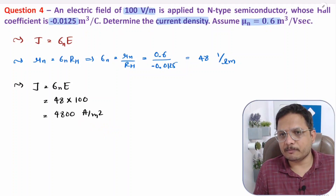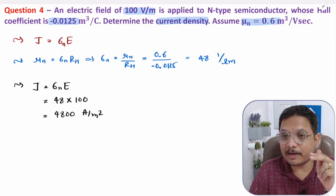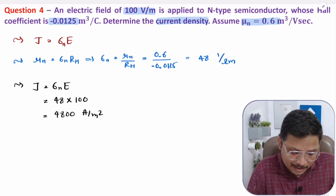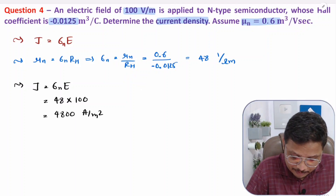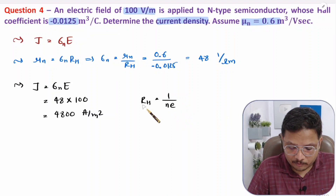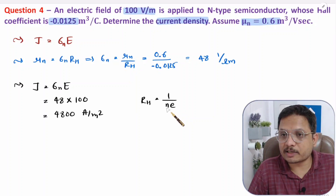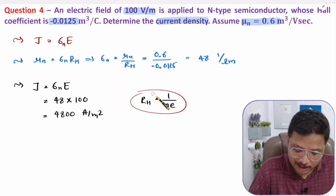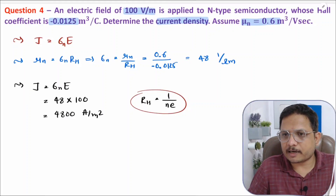You should know that there is a relation between mobility, conductivity, and Hall coefficient. Also, the Hall coefficient formula is Rₕ = 1/(n·e) for N-type, and Rₕ = 1/(p·e) for P-type semiconductor, where n is electron concentration and p is hole concentration.